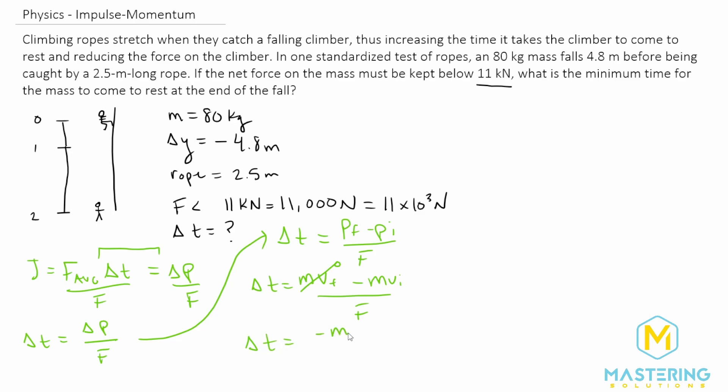So delta t is equal to a negative mv initial all over force. Now the problem with this is we don't know what the initial velocity is at point one.